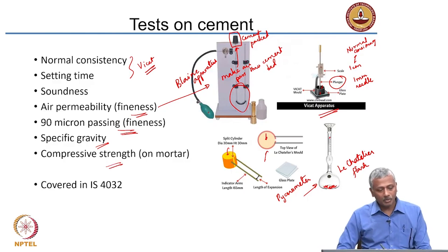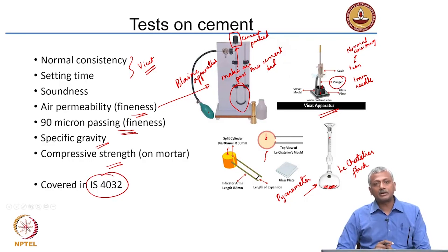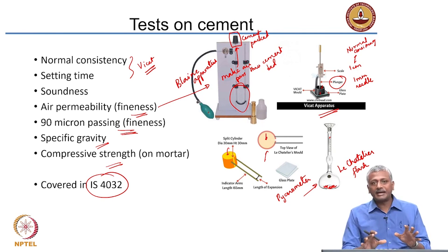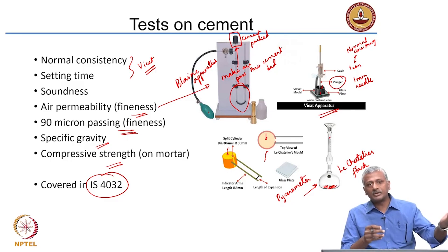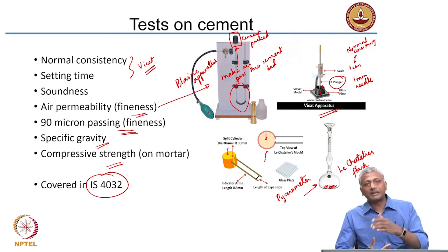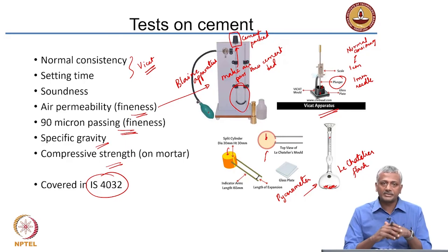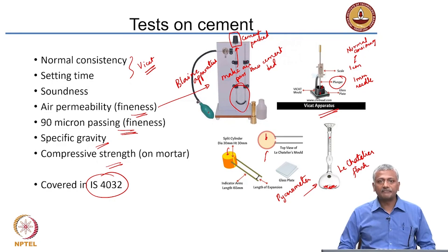Compressive strength is determined on mortar as I mentioned. These physical property tests are covered in IS 4031, whereas chemical composition tests for cement are covered in IS 4032. It is very important that during this course, you get access to the different Indian standards mentioned in the lectures — for brick and stone standards, concrete block standards, cement types, and cement testing — and familiarize yourself with the approaches in these standard test methods.